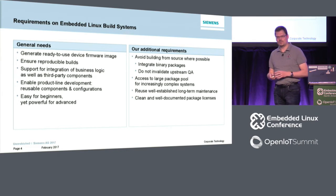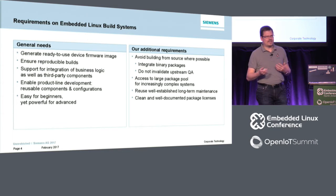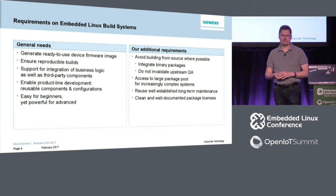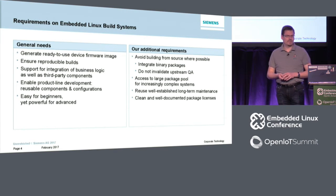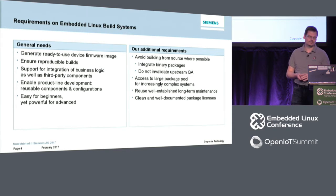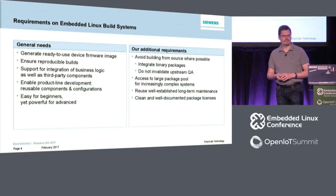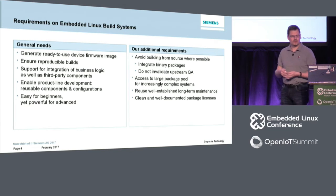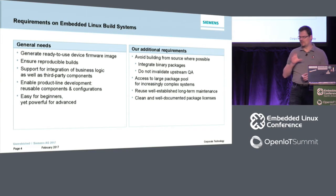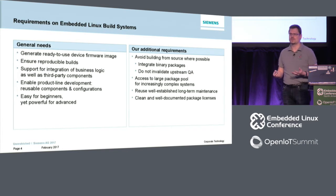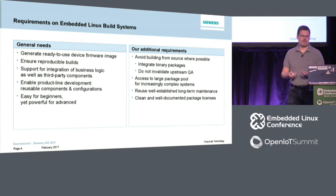Furthermore, as we operate in markets requiring very long product support — ten years is just a lower bound — we want to use the established long-term maintenance processes that exist with distributions, which are not common yet for source-based builders. And last but not least, very important for us is OSS license compliance: following the obligations that open source licenses put on you, understanding which licenses are involved, which is not trivial. Having a source from upstream where this information has been gathered carefully means you can build on it without redoing that work.